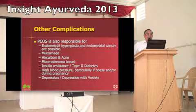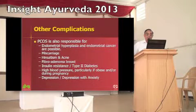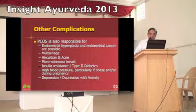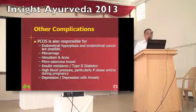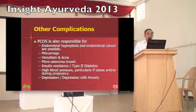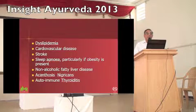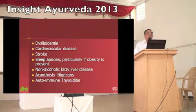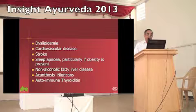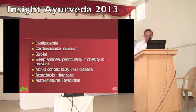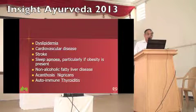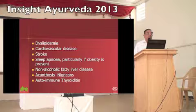Insulin resistance leading to diabetes, hypertension particularly in obese patients, depression and anxiety, sleep apnea, cardiovascular diseases, stroke, non-alcoholic fatty liver disease — the whole spectrum of metabolic syndrome — as well as acanthosis and autoimmune fibromyalgia are associated conditions. These are not just co-morbidities; they are also caused by polycystic ovarian syndrome.